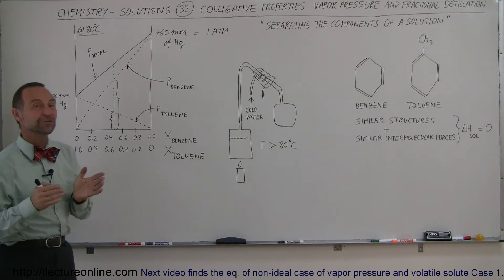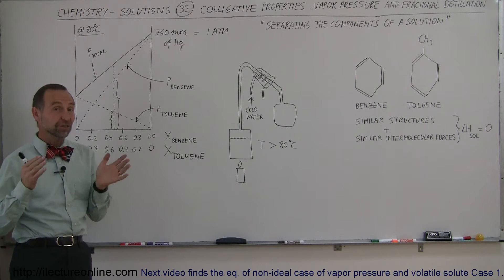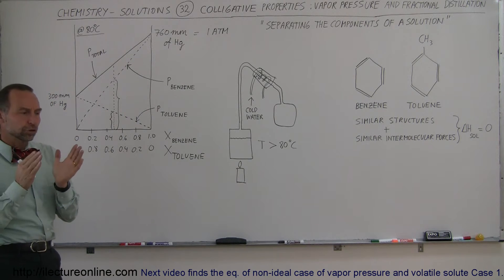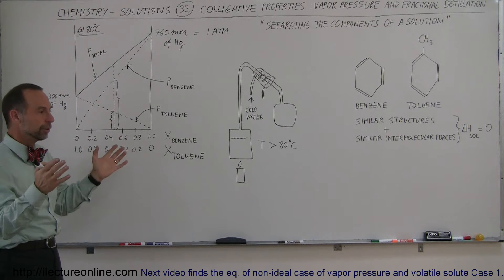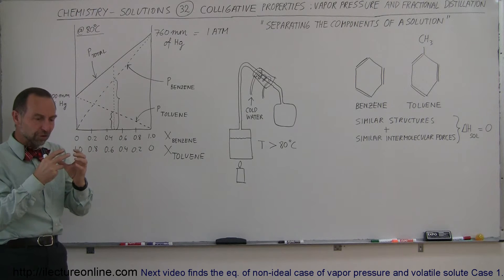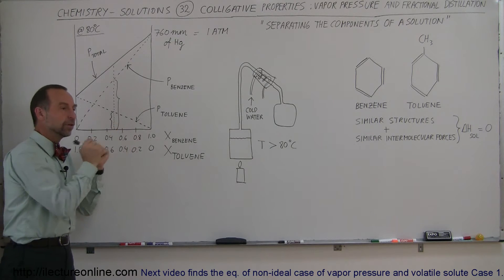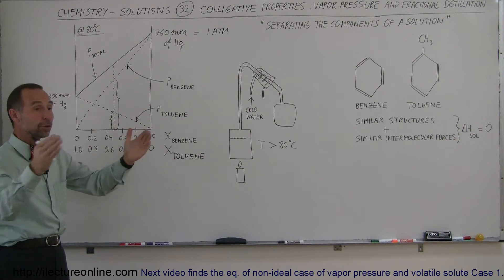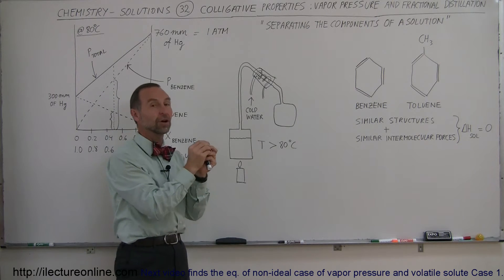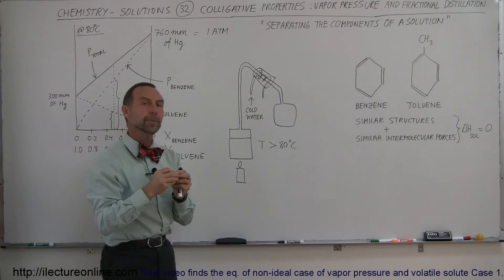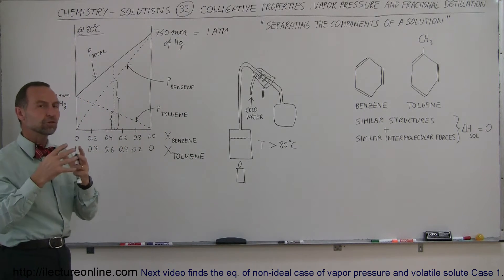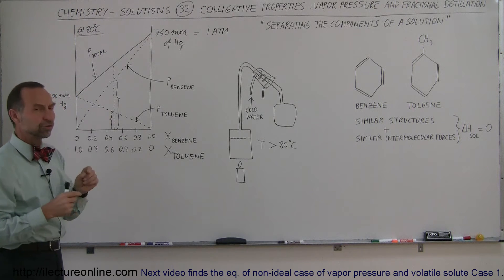Welcome to Electron Line. We're going to talk about fractional distillation and why we need it. Whenever you have a solution where two or more components are similar in structure and intermolecular properties, the intermolecular forces are virtually the same between all the molecules. For example, with benzene and toluene, because of their similar structure, the vapor pressure of the solution is simply the sum of the vapor pressures of the individual components.